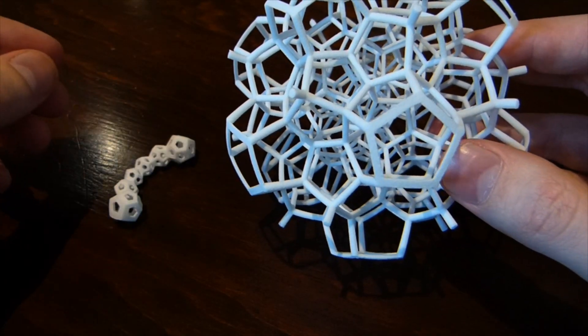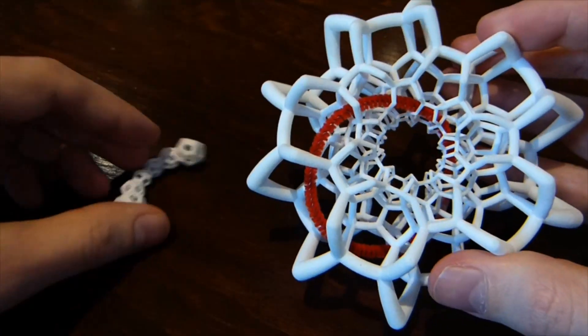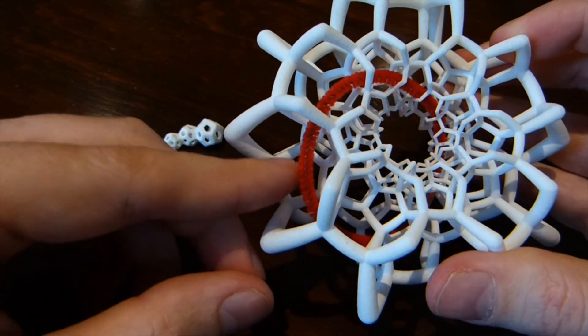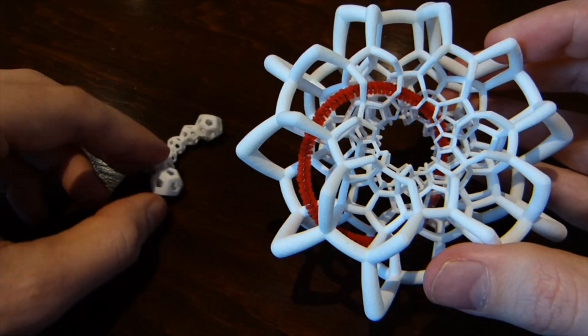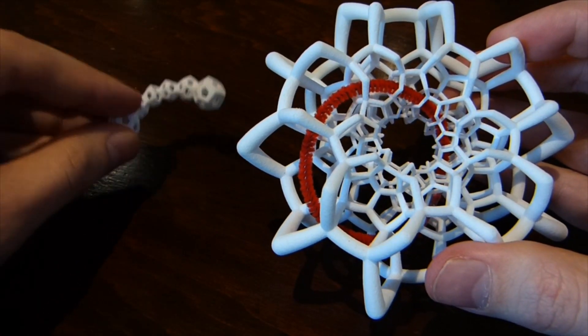It's easier to see what's going on with the toroidal half 120-cell. So I've got a pipe cleaner in here which is showing what's going on here and where this object comes from.